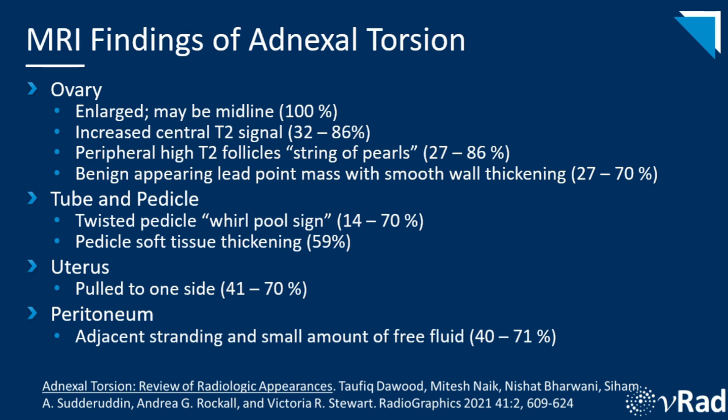The MRI findings are basically the same as CT, with an enlarged abnormally positioned ovary being the most reliable finding, followed closely by edema manifesting as increased T2 signal. To summarize: enlarged midline ovary, increased T2 signal, peripheral high T2 follicles — the string of pearls sign — a benign appearing lead point mass with smooth wall thickening, a twisted pedicle, pedicle soft tissue thickening, the uterus possibly pulled to one side, and a small amount of free fluid with adjacent stranding.